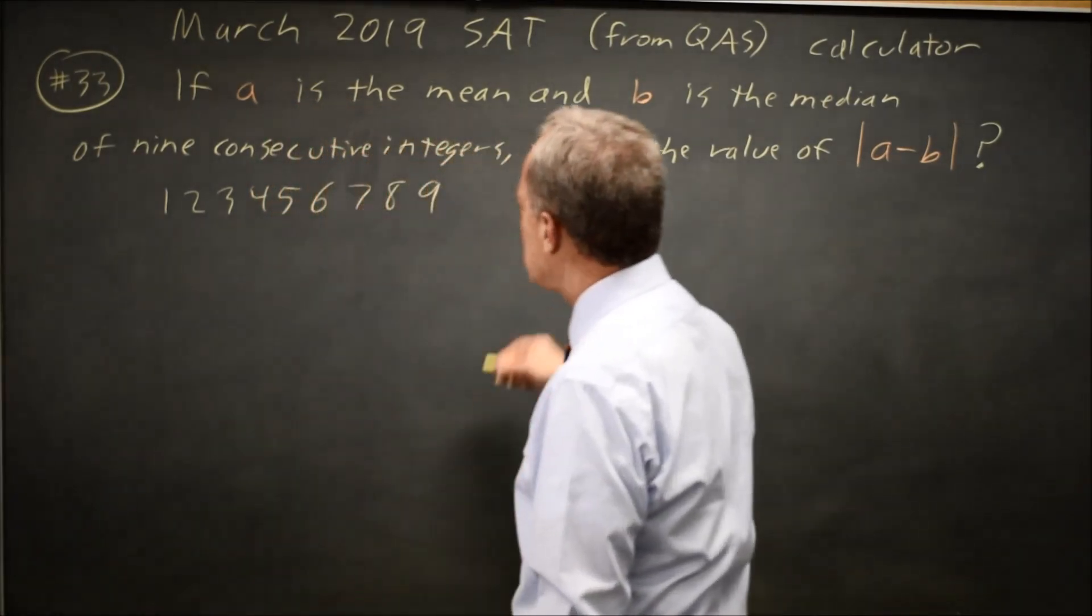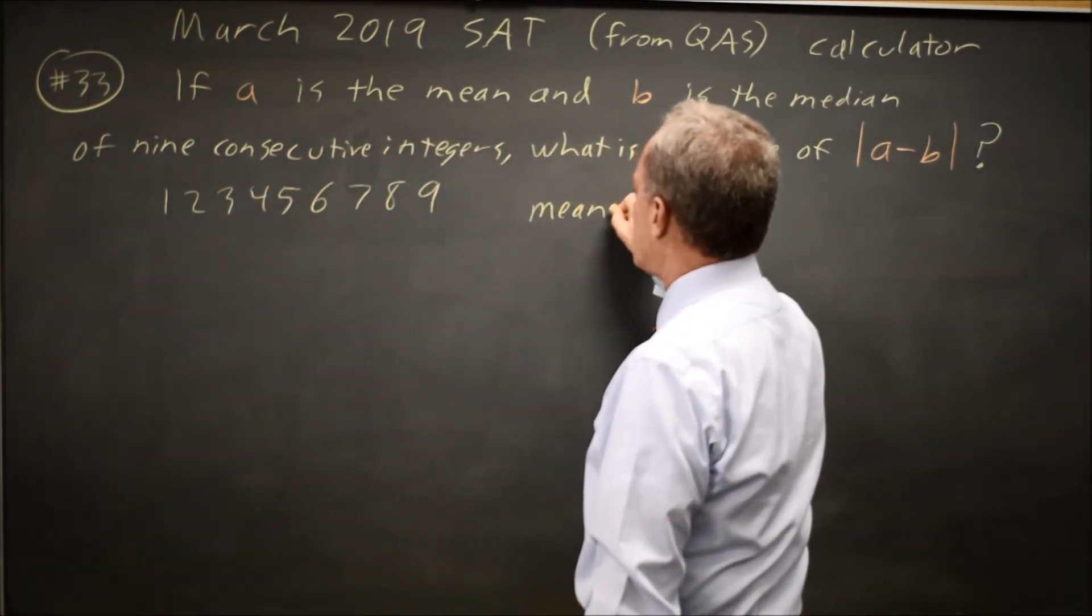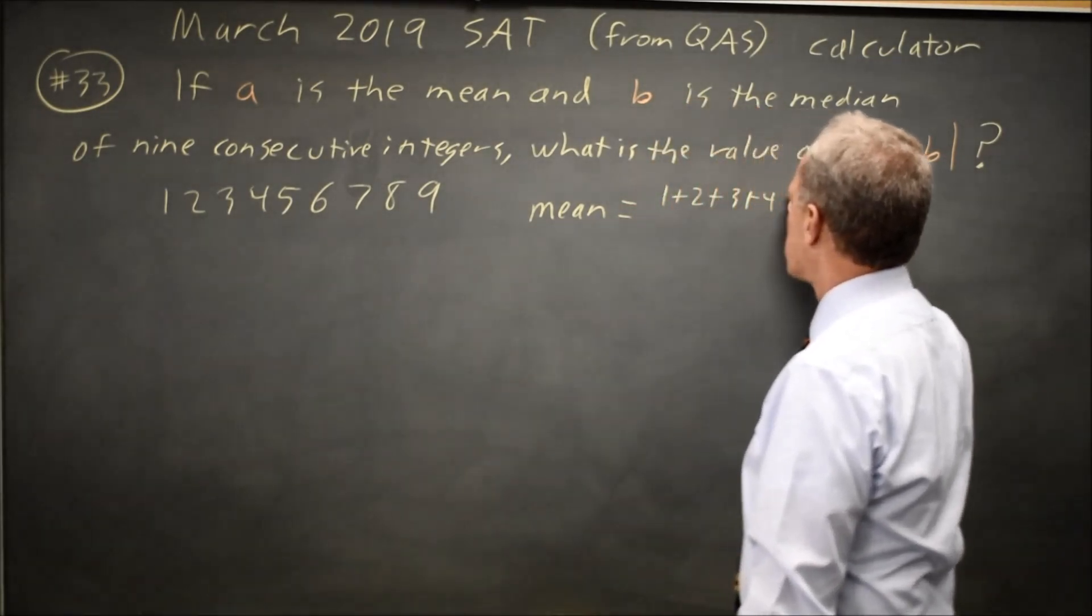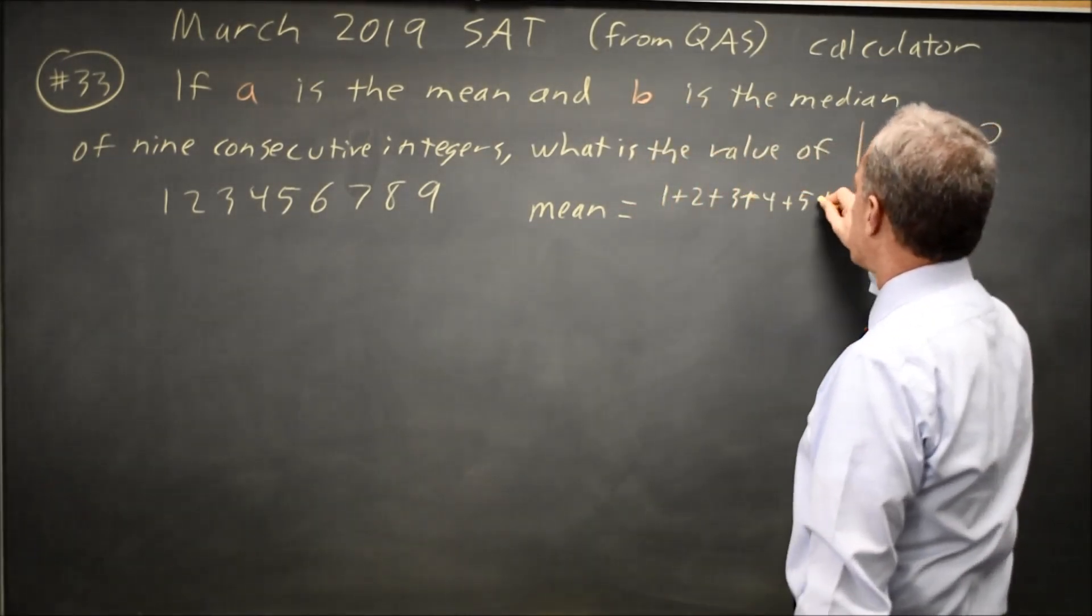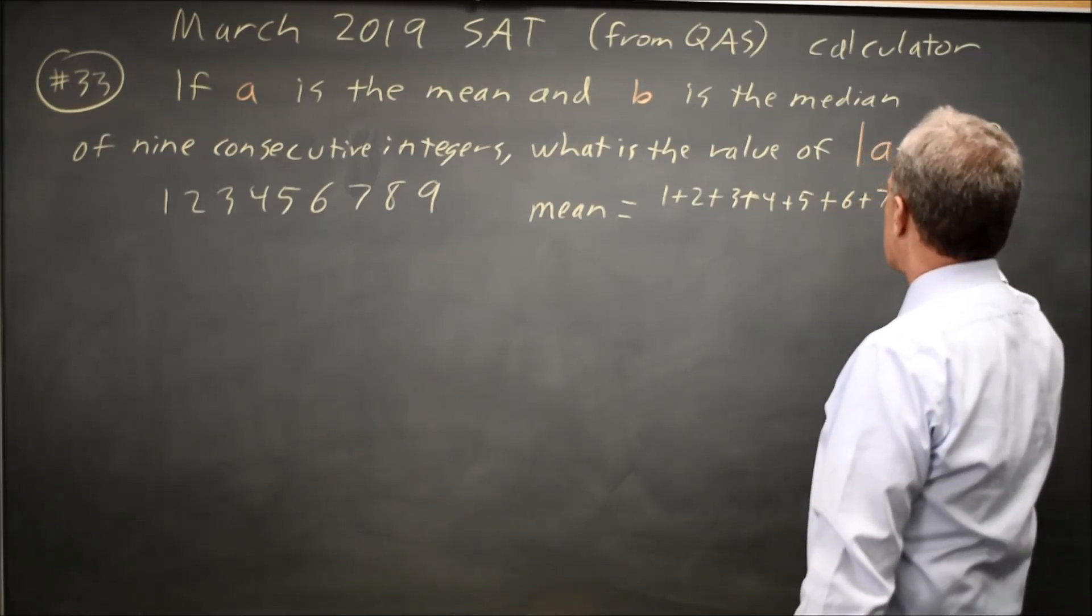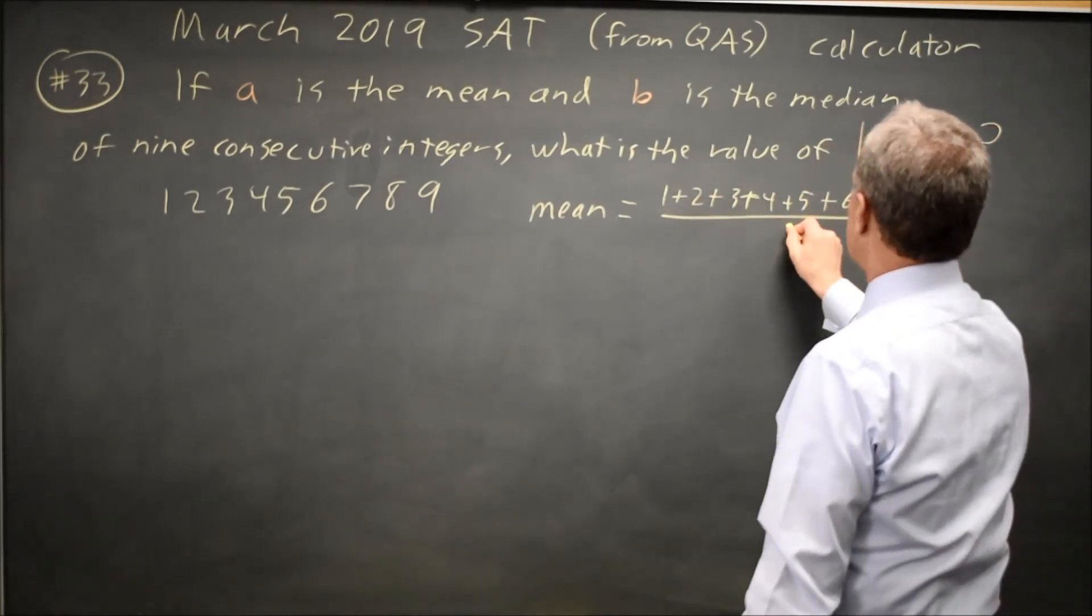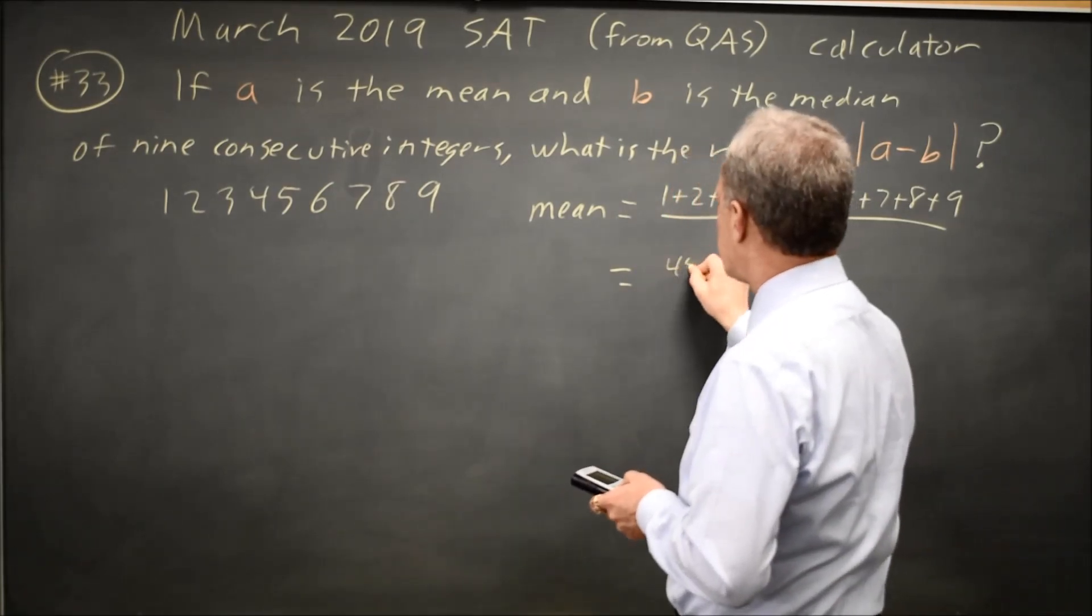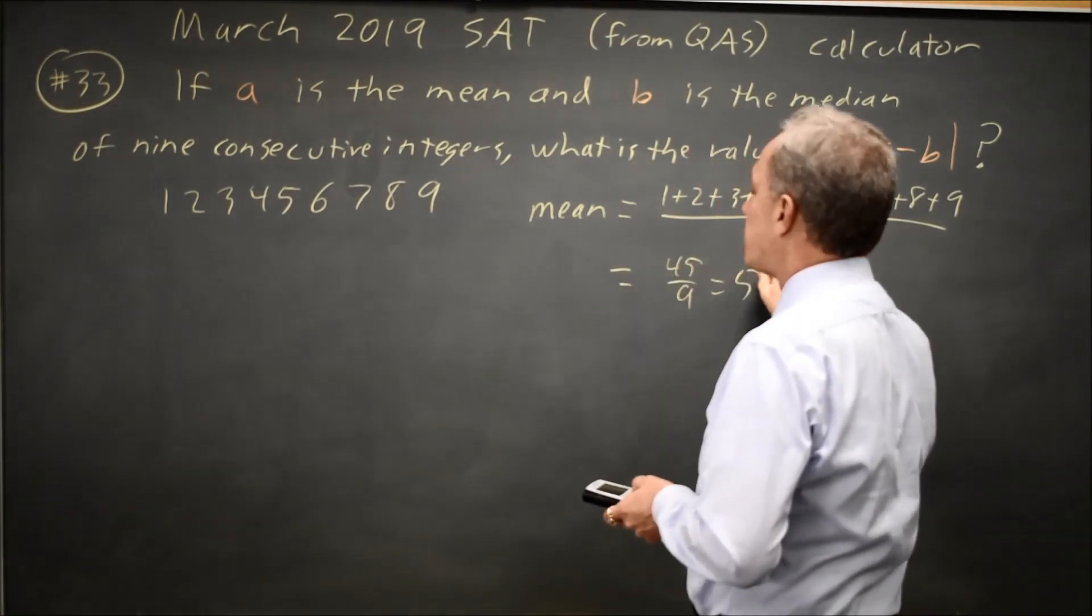9. The mean is add them up and divide by nine. That is, according to my calculator, 45 over nine is five.